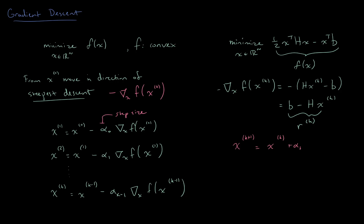With this notation in hand, the core gradient descent iteration is: xk plus one equals xk plus alpha k times rk. We just repeat this iteration over and over again. That's really all there is to it, with one small caveat: we have to decide what the step size alpha k is. And as you'll see on the homework, the choice of alpha k can make a big difference in terms of how quickly this is going to converge.